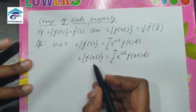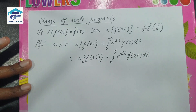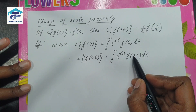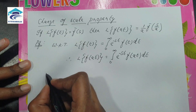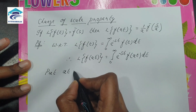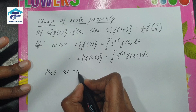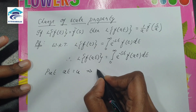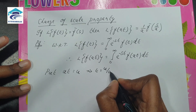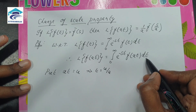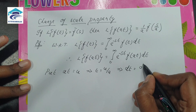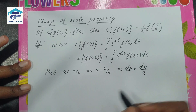Instead of f(t) here we have f(at). In order to get the right hand side, we are going to take this 'at' as some other variable. Put at equal to some other variable, let it be u. This implies t is equal to u/a, and we have t and dt, so this implies dt is equal to du/a.